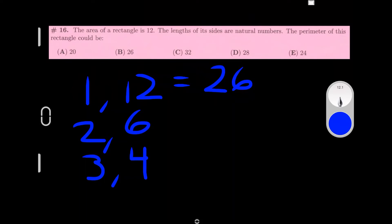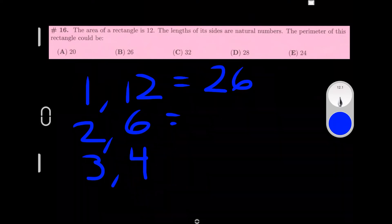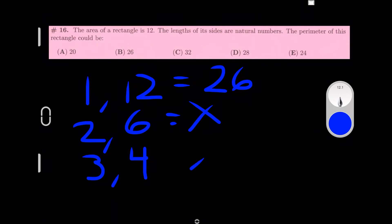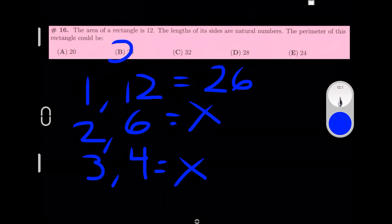Now let's look at the next one. 2+6 is 8, and that's only 2 of the 4, so 8×2 is 16. 16 isn't an option, so it can't be this one. And 3+4 is 7, times 2 is 14. 14 isn't an option either. So our answer is B, 26.